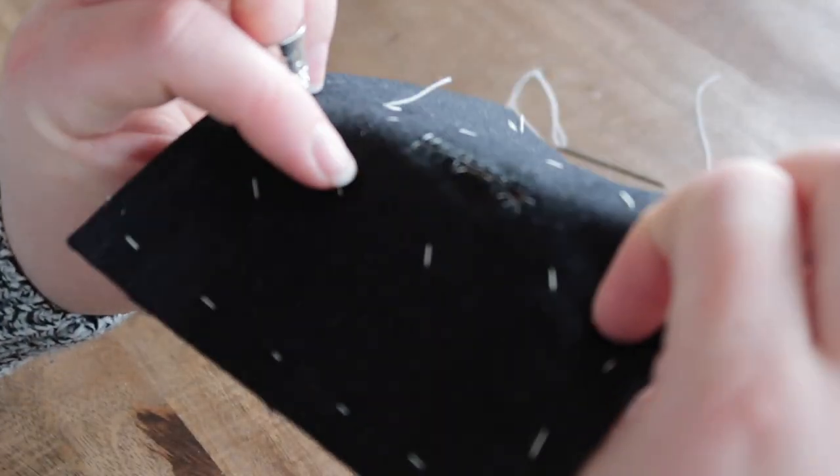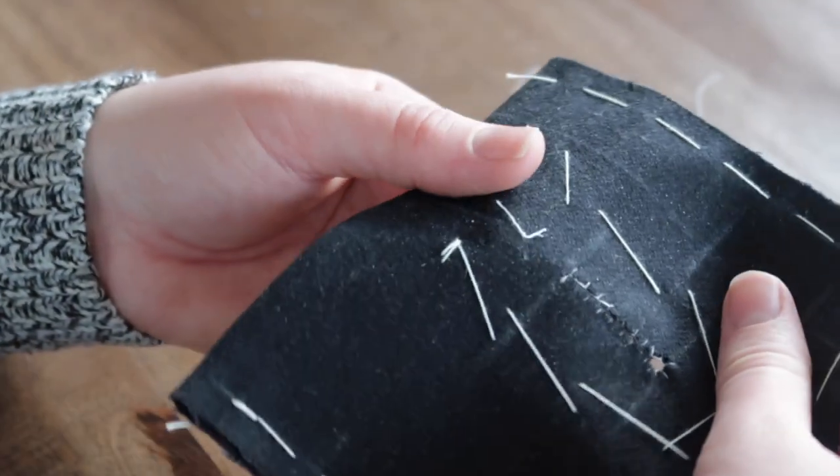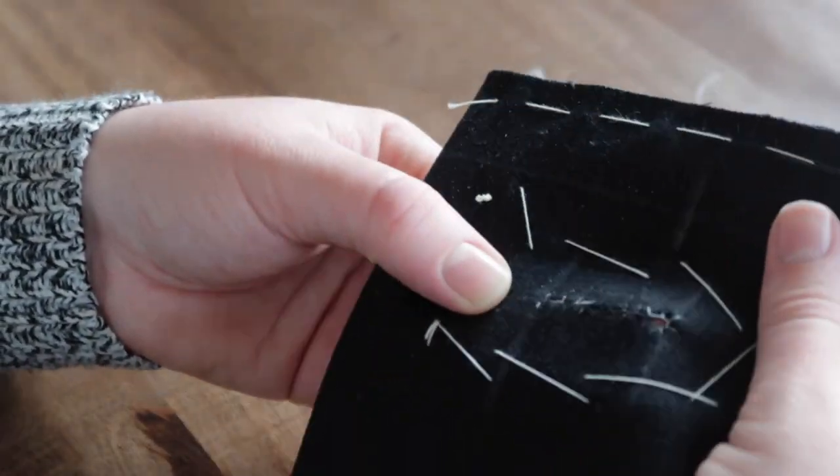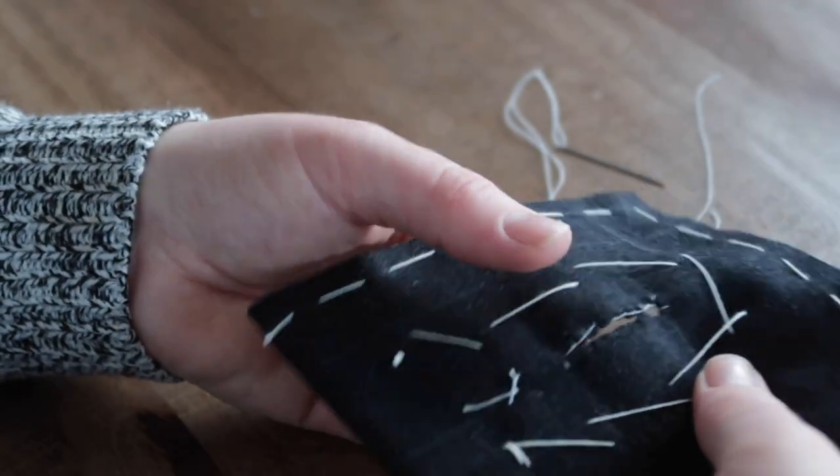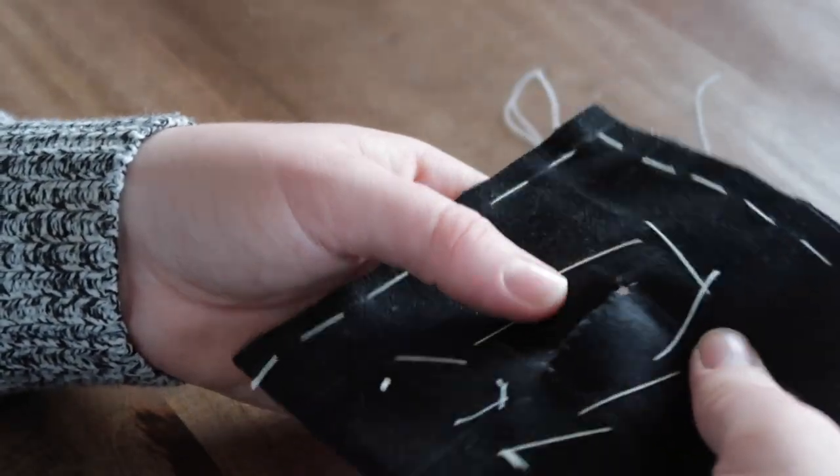This is then what it looks like when it's overlocked by hand. Normally if I'd use the same color, you wouldn't actually see the stitch, but you can see that there's no thread sticking out.